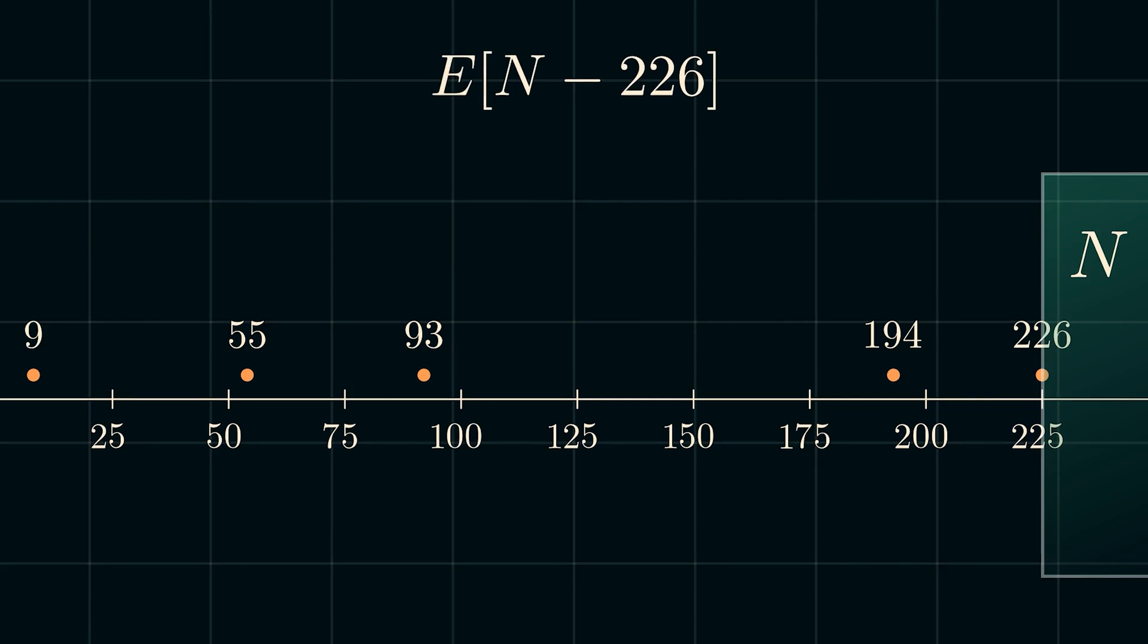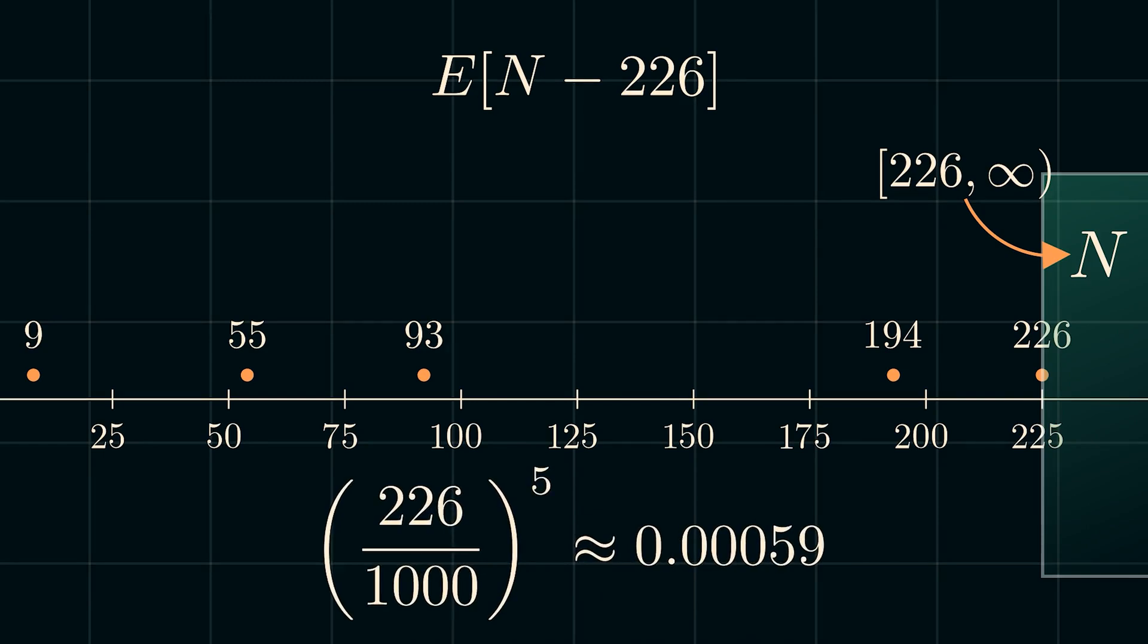So the maximum n is in the interval 226 to infinity. Assuming the tanks were captured randomly, it intuitively makes sense that n shouldn't be that far from 226. For example, if n was actually 1000, then the probability of our sample containing only serial numbers at or below 226 would be equal to 226 over 1000 to the power of 5, which is equal to 0.00059.